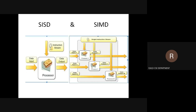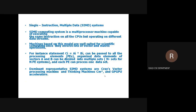In the SIMD diagram, you have data input 1, data input 2, up to data input N, given to processor 1, processor 2, up to processor N. One data is given to one processor, another data to another processor. The same single instruction stream is given to all processors with different data. You get multiple outputs — a single instruction but multiple data and multiple outputs.